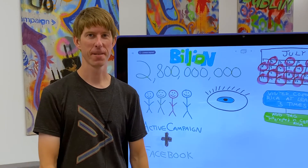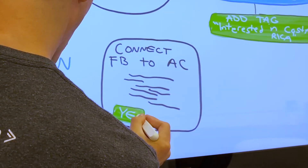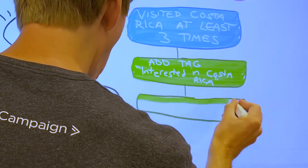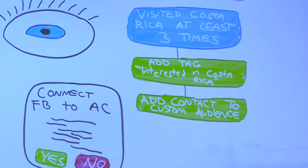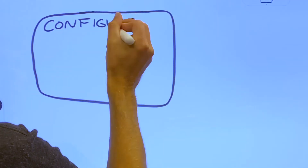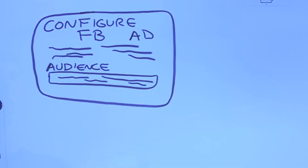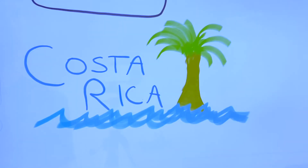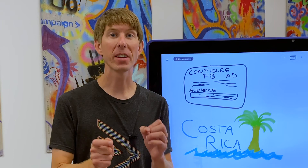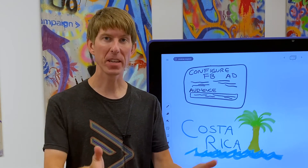Let's explore how to do this. First, we'll connect our Facebook ad account to ActiveCampaign. Next, we'll add an action to the automation to add that contact to a Facebook custom audience. Lastly, we'll configure our Facebook ad to display that same custom audience and to direct contacts to a landing page about our vacation package. We can capture visits to that page using ActiveCampaign site tracking. You now know which prospective customers are interested in your Costa Rica vacation package and have engaged with a relevant ad on Facebook.